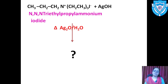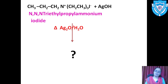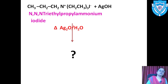This is a beta elimination, but we get the least substituted alkene. Ethene will be the product because it has no substitution, whereas propene would be mono-substituted. So the preferred product is ethene. Please solve this question; it is already solved in your textbook, so please go through it.